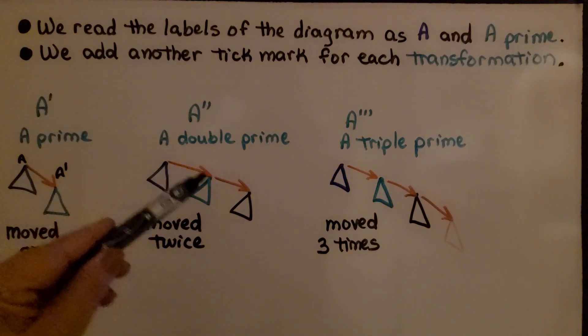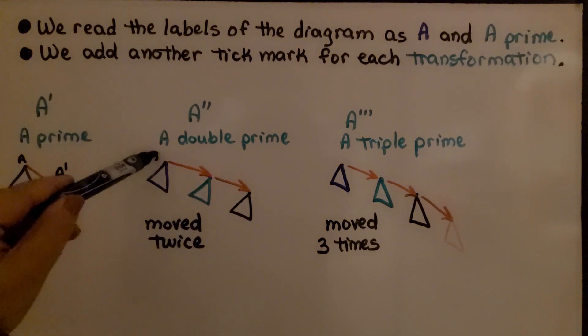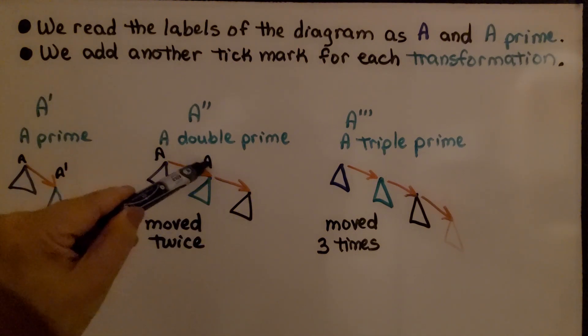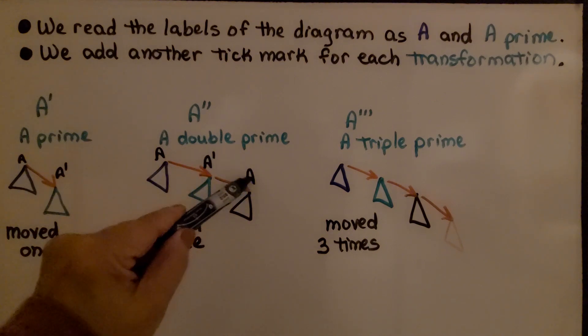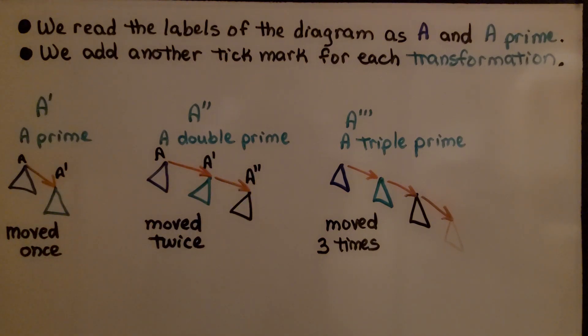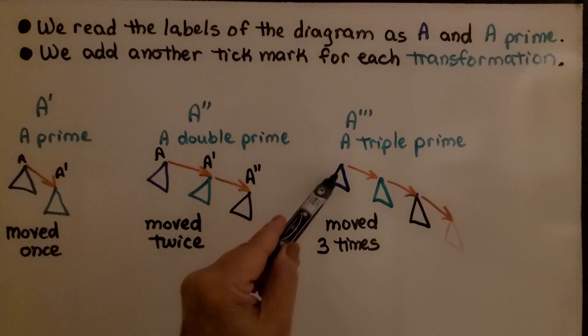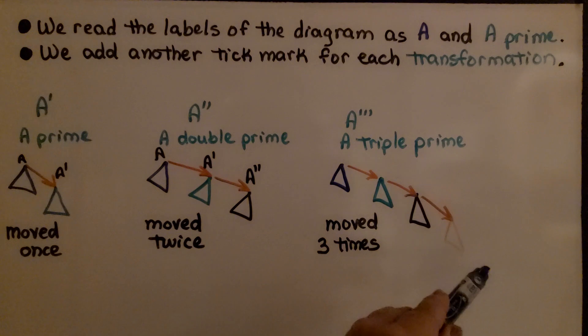it goes from A to A prime. If it moves twice, it goes from A to A prime to A double prime. And if it moves again, it's moved three times—it was here and then it moved, moved, moved.